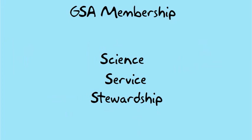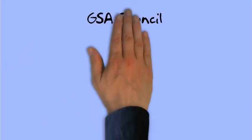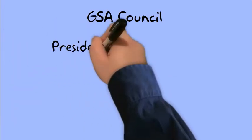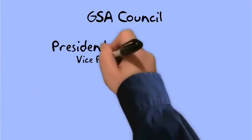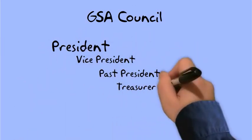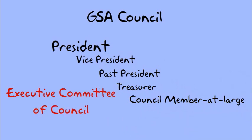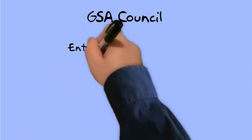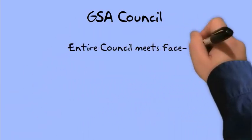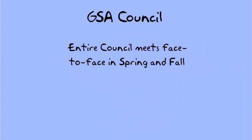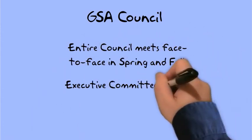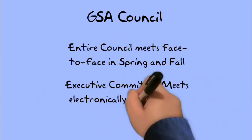Serving the membership is GSA Council. This is an elected pool of your peers that steers and guides GSA. The Council is led by the President and a team of officers that make up a subset of Council called the Executive Committee. Council meets twice a year but works on issues throughout the year electronically. The Executive Committee, however, meets almost every month.